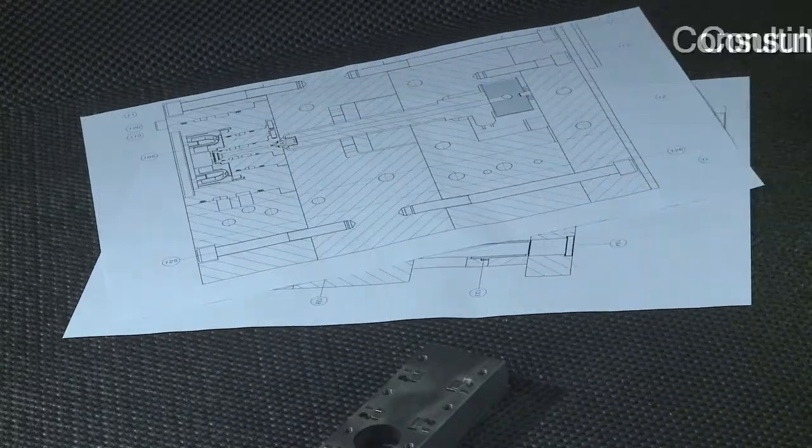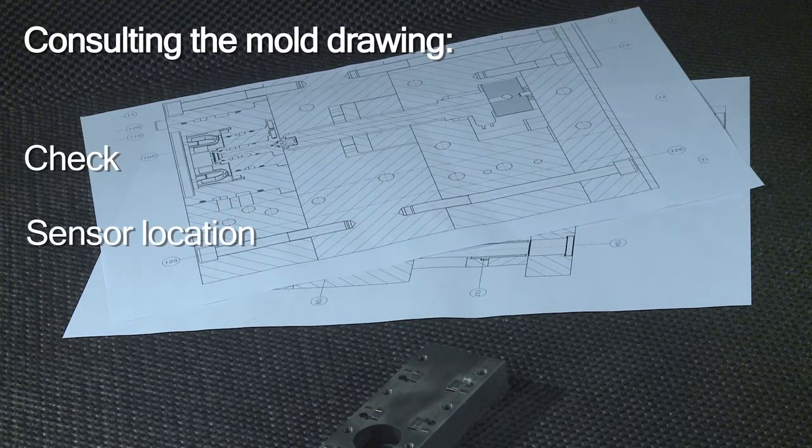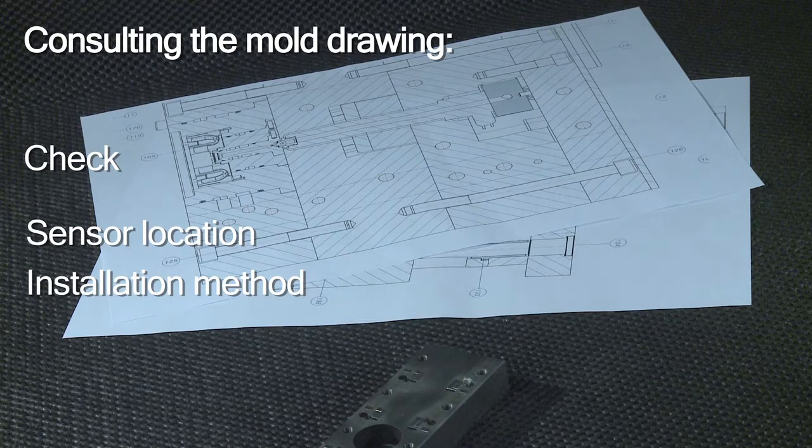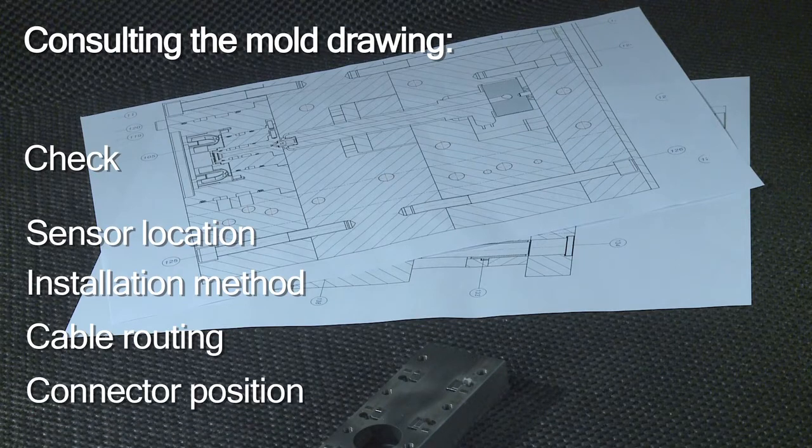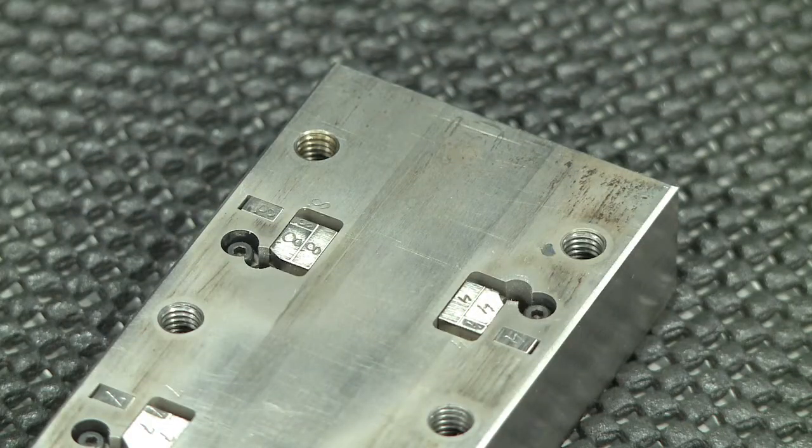Next, you should consult your mold drawing and check that the sensor location is precisely identified, that using a spacer sleeve is the appropriate installation method, that the cable routing is clearly evident, and that the exact connector position is marked. Our example shows an insert plate where the sensors will be installed.